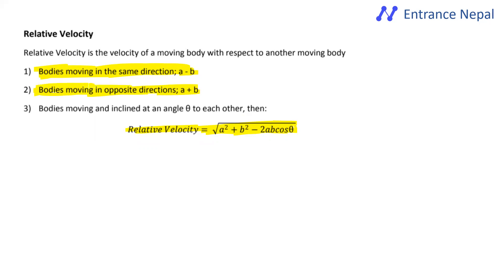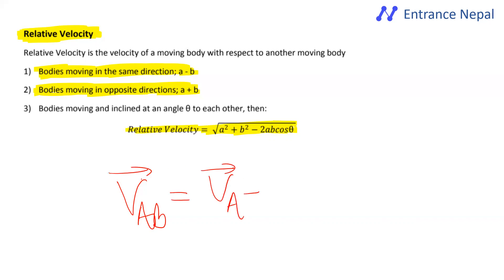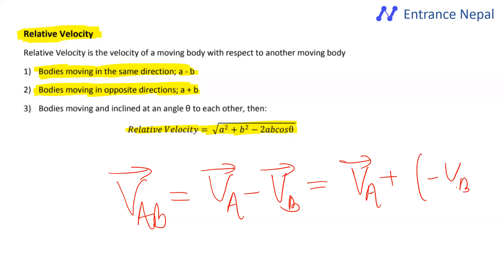The velocity of a moving body with respect to another body is the relative velocity. This is an important concept involving subtraction of vectors. The relative velocity of A with respect to B is vector VA minus vector VB. This is the subtraction of vectors: vector BA equals vector VA plus negative of vector VB.